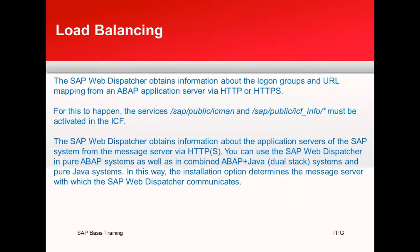Now let's look at how load balancing is performed. For load balancing, there are two ICF services that must be active: SAP Public ICF LAN and SAP Public ICF NSC. These two services must be active for the Web Dispatcher to function and perform load balancing. The SAP Web Dispatcher obtains information about application servers in the SAP system from the message server via HTTP or HTTPS. You can use the SAP Web Dispatcher in a pure ABAP system as well as in combined ABAP plus Java systems.